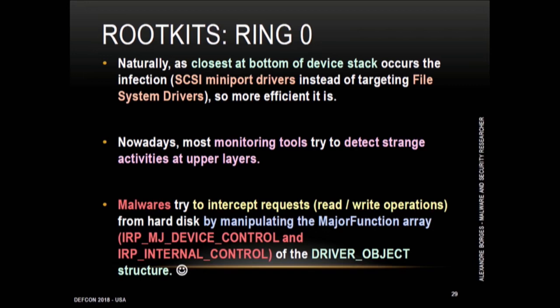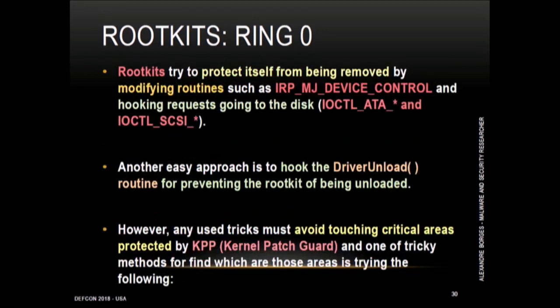Some malware try to intercept requests such as read and write operations by manipulating the major function array. For example, device control and IRP internal control callback dispatch routines. Rootkits try to protect themselves from being removed by modifying functions such as IRP_MJ_DEVICE_CONTROL and hooking requests going to the disk. Some malware try to hook the driver unload routine for preventing the rootkit from being removed. However, most malicious drivers try to avoid touching areas protected by PatchGuard, because PatchGuard is very tough to circumvent.